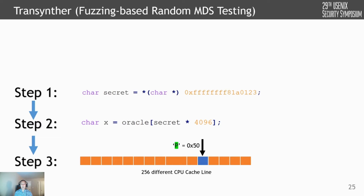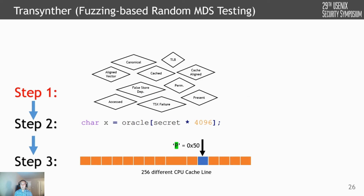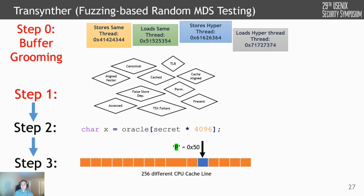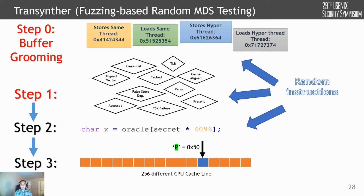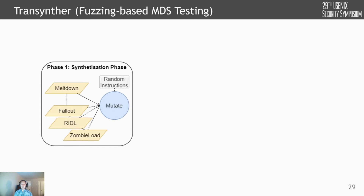Meltdown has three steps. Instead of step one, we're going to replace this step with a randomly generated memory operation. To achieve this, we take those conditions we discussed earlier and mix and match them randomly to generate a new memory access that is either faulty, faces a microcode assist, or an exotic condition. We also generate other memory instructions before this first step that put data into different microarchitectural buffers and into the pipeline — these can be different memory operations generated randomly, and they put known data into the pipeline so we can find out if any of that data has been leaked. We also add some random instructions, because adding or removing instructions in the proof of concept may actually change the leakage behavior. This is how Transinter generates random code snippets, with the hope of reproducing a variant of these attacks or even finding new variants.